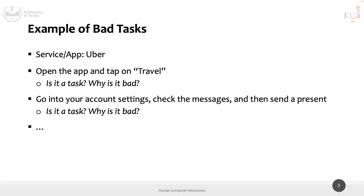We still have two more tasks to evaluate. 'Open the app and tap on travel' — is this a task? No, because it doesn't have a goal, and it says exactly how to do that in the current version of the Uber application. It's not just a series of steps — it's even worse because it describes how to do something in the current version of the app. Keep this in mind: if your task description says 'click on this' or 'open this menu,' that is the same kind of bad task — no goal, describes how.